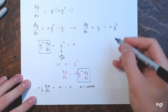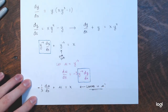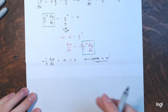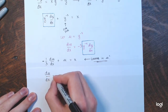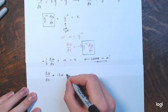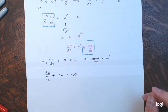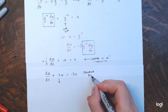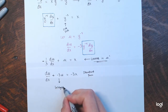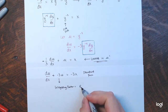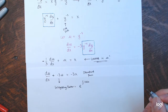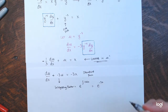Multiplying through by −3 to get standard form: du/dx − 3u = −3x. Finding the integrating factor: e to the integral of −3 dx, which is e^(−3x). The integrating factor is e^(−3x).